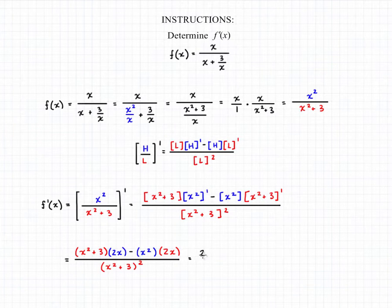We can factor out that 2x because it's being multiplied by both terms in the numerator. And we'll be left with x squared plus 3 minus x squared all over x squared plus 3 the quantity squared. And if we cancel out those two x squareds in the numerator, we'll have our final answer, which is that our derivative is equal to 6x over the quantity x squared plus 3 squared.